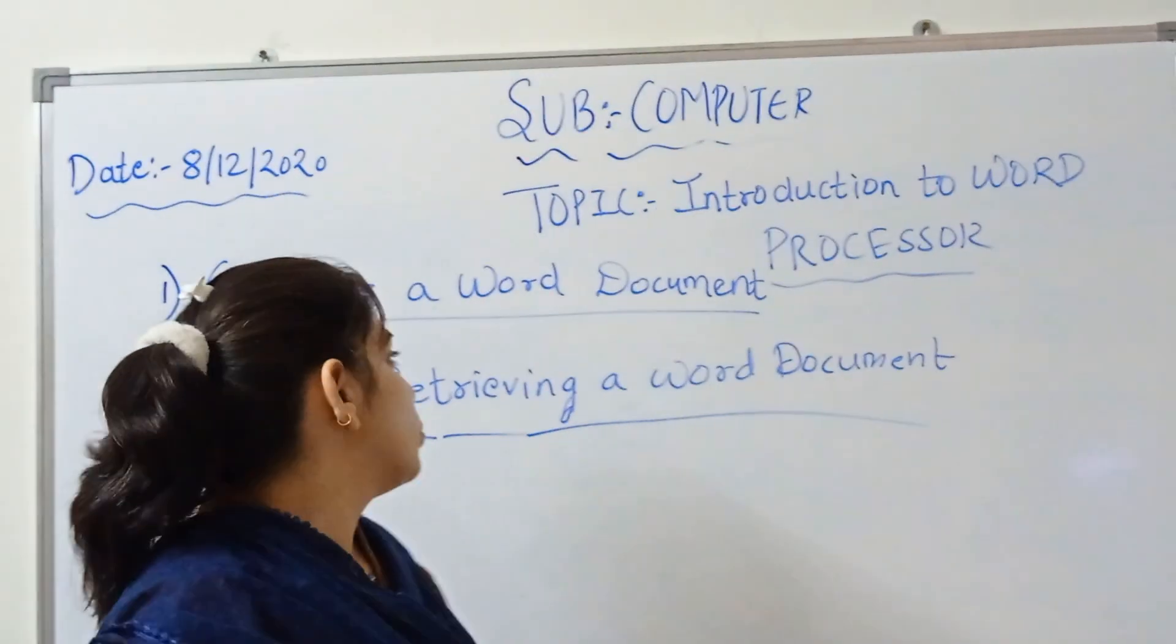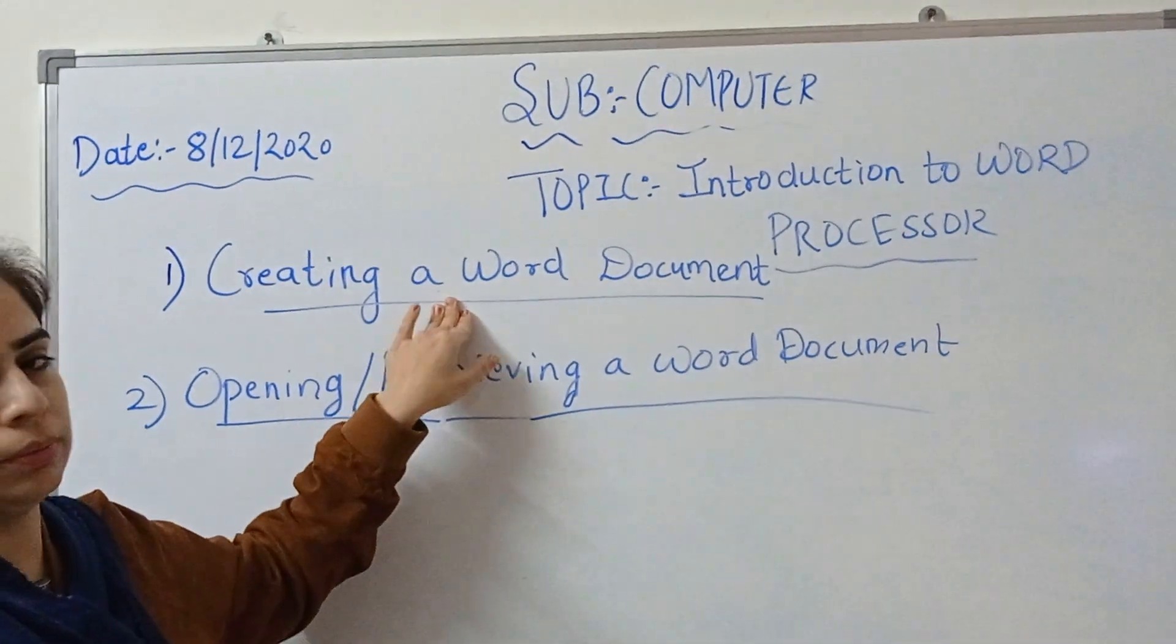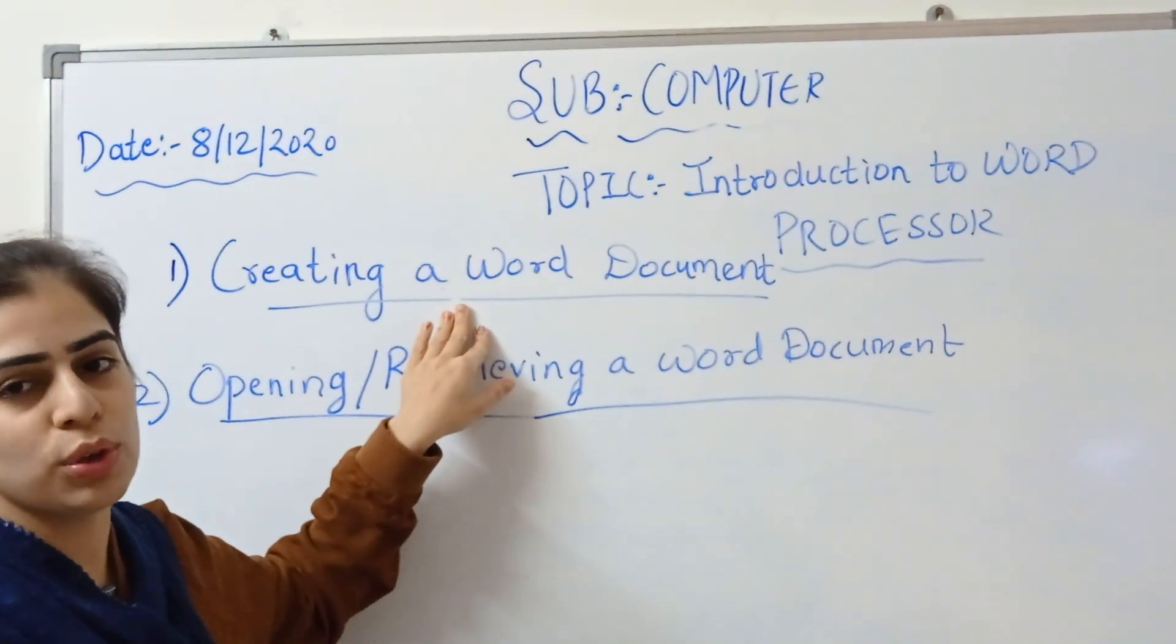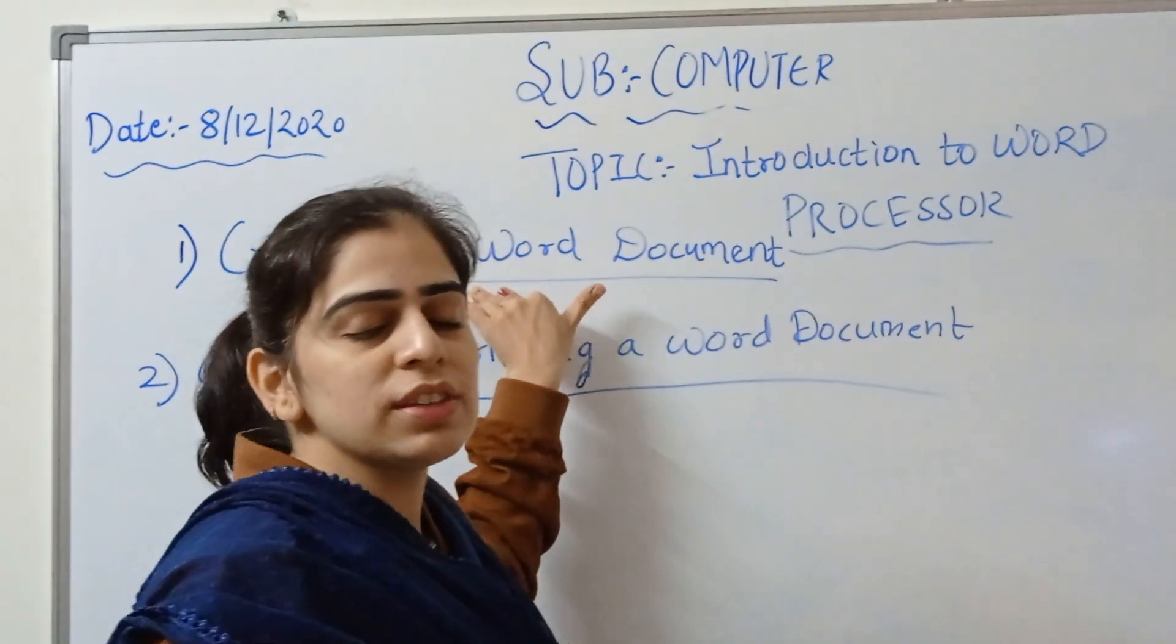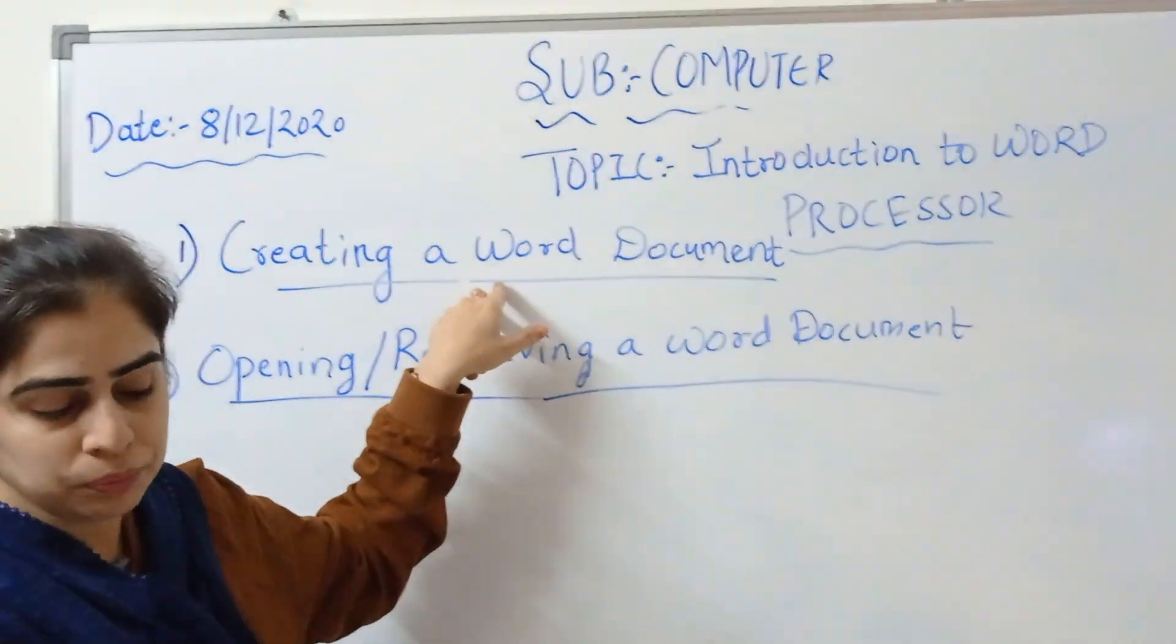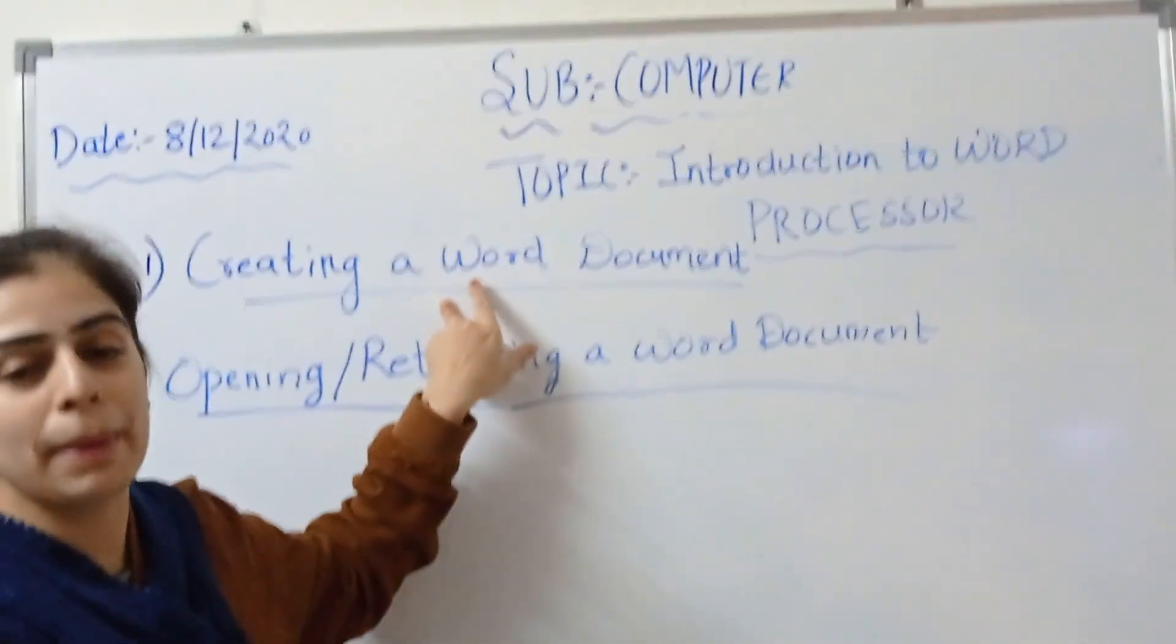So these are the four different steps to create a word document. That means to create any word document, you will have to follow the four different steps. First step is to click on Microsoft Office button. Second step is to click on New option. Third step is to select Blank document.